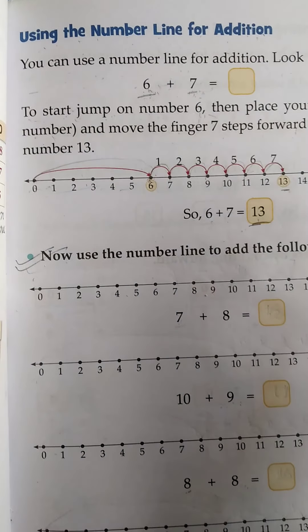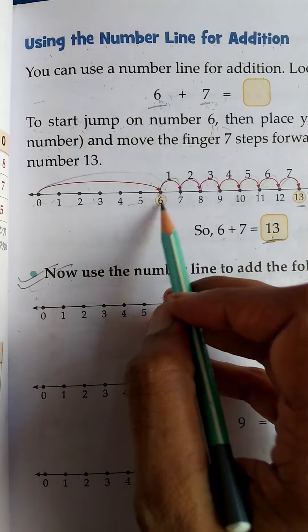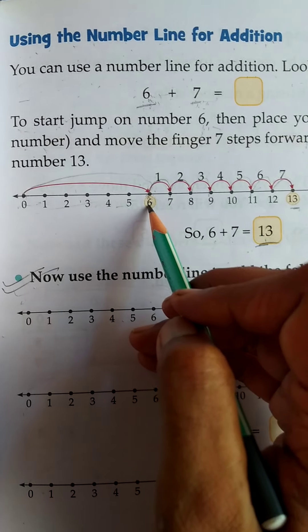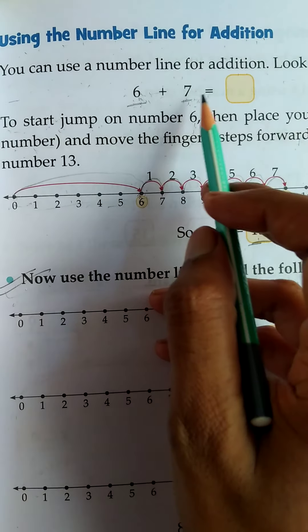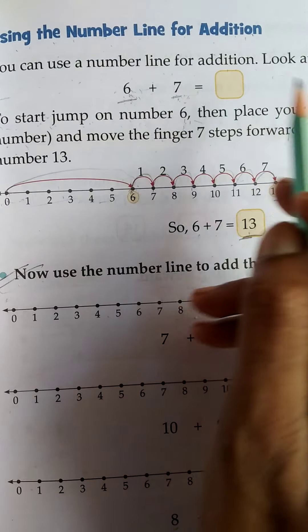How to solve it: firstly, you will take a jump of the first number. Then, after that, take the second number of steps forward.